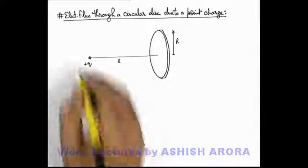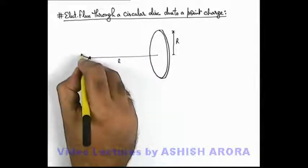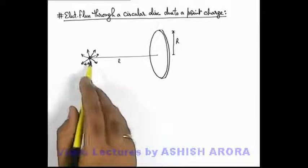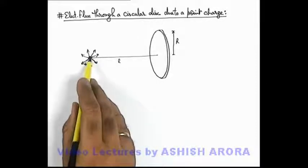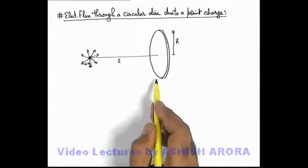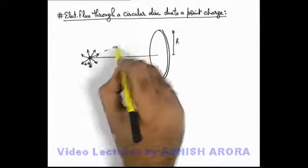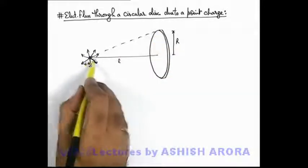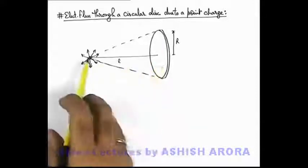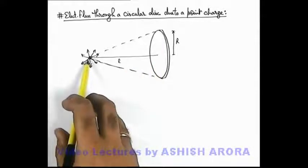We know that a point charge originates its electric flux uniformly in all directions. And say here we are required to find the amount of flux from this charge q which passes through the surface of this disc. So here we can say that, if we consider a conical region, of which the base coincide with the disc and vertex with the location of point charge.